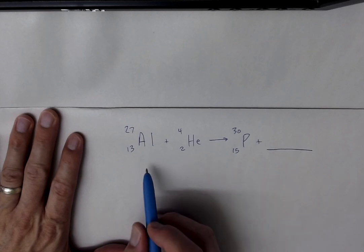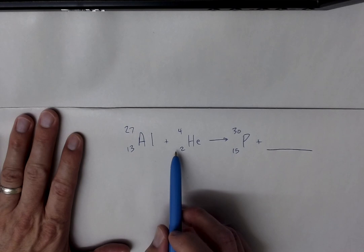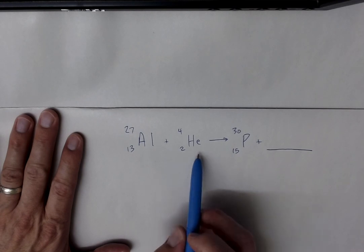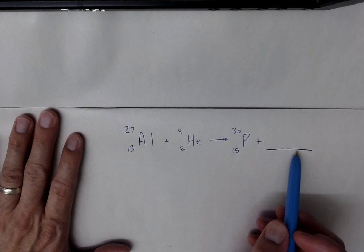All right, so in this transmutation problem, we're going to have aluminum-27 interacting with helium-4, and it's going to produce phosphorus-30 and something else.